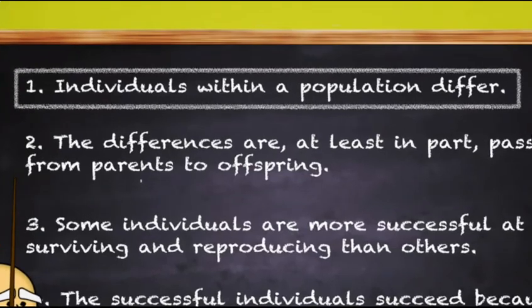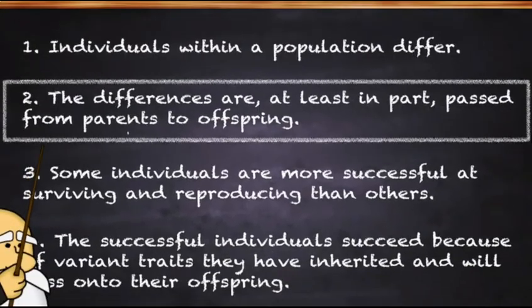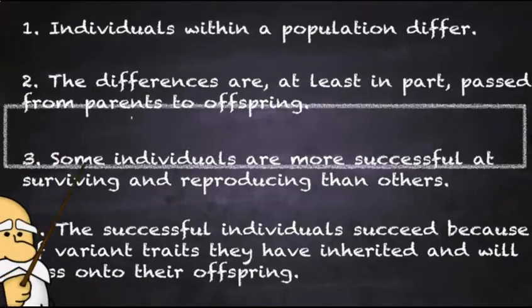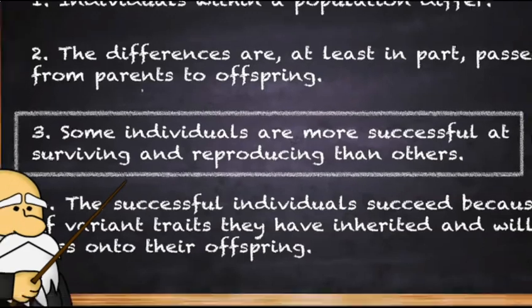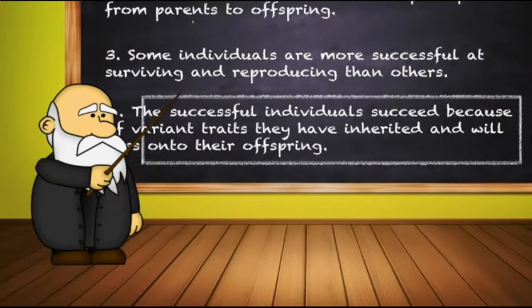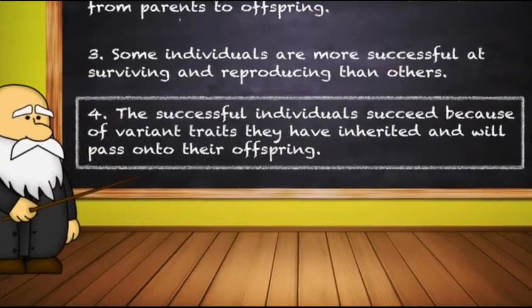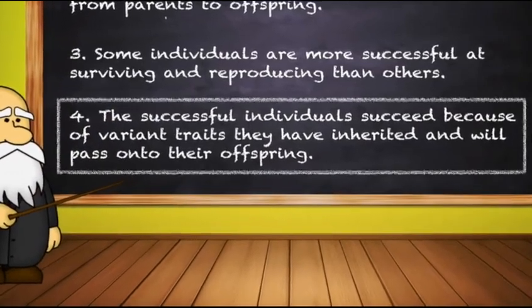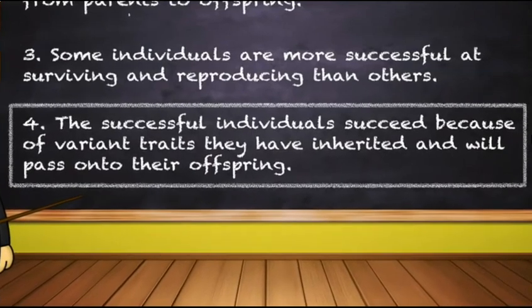Let's review. Individuals within a population differ. The differences are, at least in part, passed from parents to offspring. Some individuals are more successful at surviving and reproducing than others. The successful individuals succeed because of variant traits they have inherited and will pass on to their offspring.